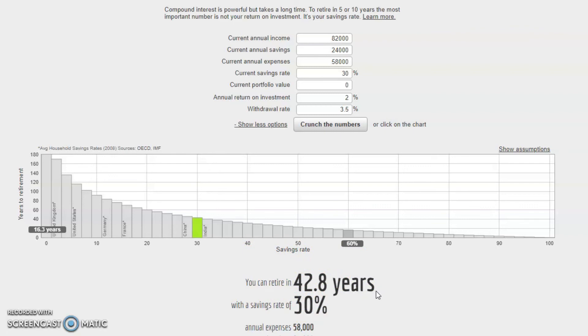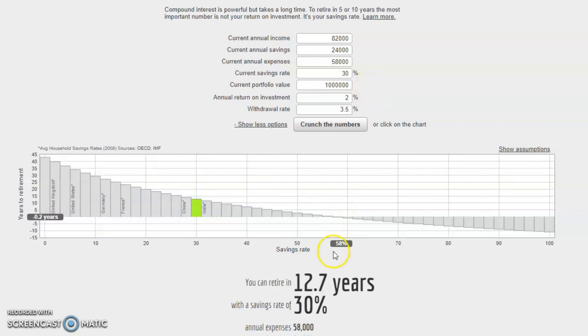You can continually adjust the inputs at the top to get updated estimates at the bottom. For example, what if this couple has already amassed a million-dollar portfolio over many years? Behold the awesome power of frugality and diligent investing.